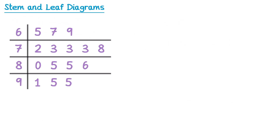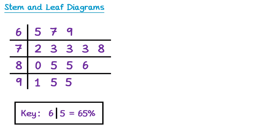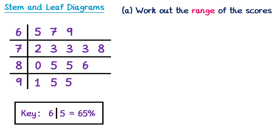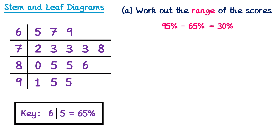Sometimes a stem and leaf diagram might already be drawn for you. This one represents the test scores of some students, with a key telling us that 6 | 5 represents 65%. You could be asked to work out the range. The range is the biggest score minus the smallest score. The biggest score is in the bottom right — that 5 represents 95%. The smallest is in the top left — that 5 represents 65%. So the range is 95 minus 65, which gives a range of 30%.